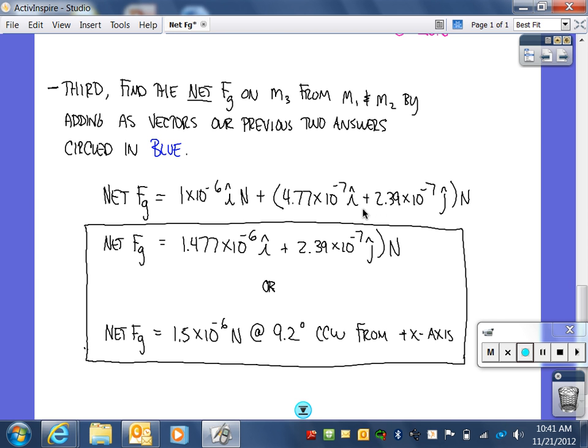This information here, the 4.77 times 10 to the negative 7th i plus 2.39 times 10 to the negative 7th j, is how hard M3 is being pulled on by M2. Adding those two together, we get an answer of 1.477 times 10 to the negative 6 i plus 2.39 times 10 to the negative 7th j newtons.